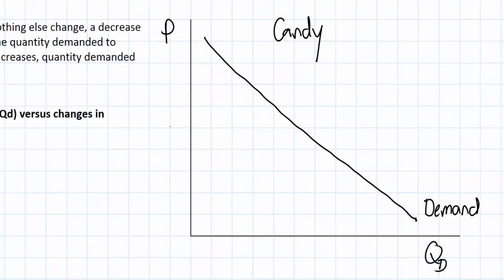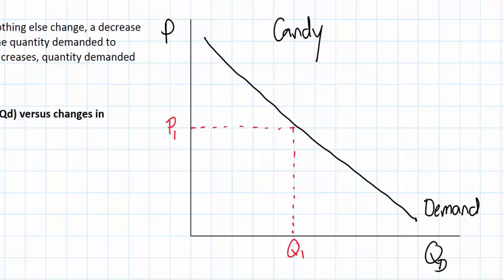Let's start by adding a price and a quantity to this graph and then talking about what would happen as the price changes for candy. So let's say that at a price of P1, my students would be willing and able to buy Q1 units of candy each week. What could cause a change in the quantity of candy demanded? Well that's pretty simple because we have a line here representing the quantities demanded at each of the prices on the vertical axis. So all that would have to change is the price itself.